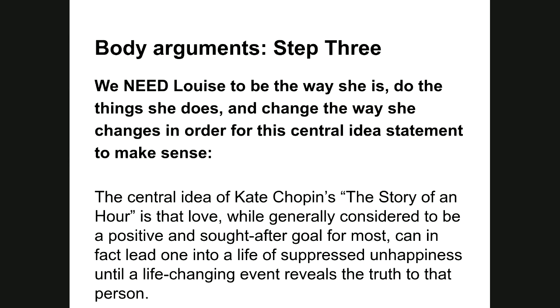Overall in step three, we're making the case that we need Louise to be the way she is, and do the things she does, and change the way she changes, in order for the central idea to make sense — that love, while generally considered positive and a sought-after goal for most, can in fact lead one into a life of suppressed unhappiness until a life-changing event reveals the truth to that person.